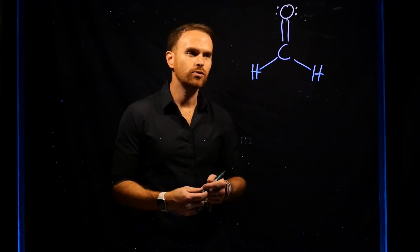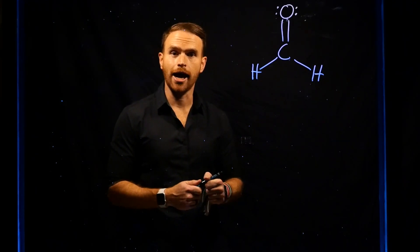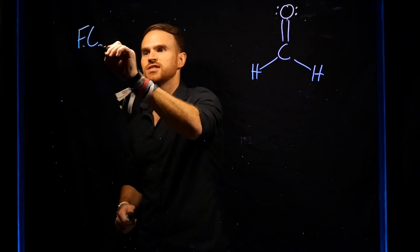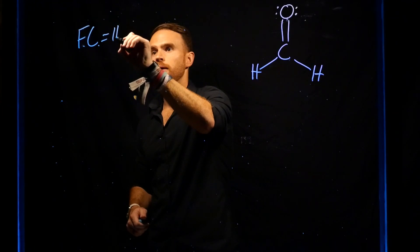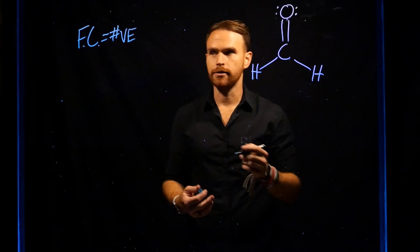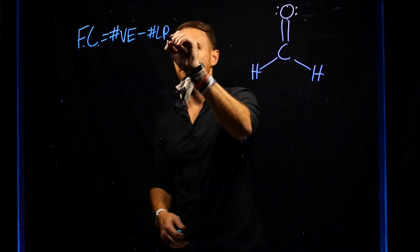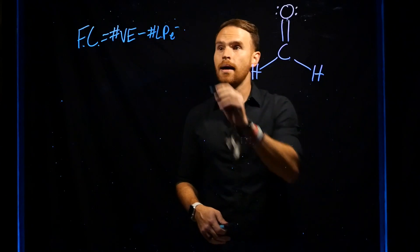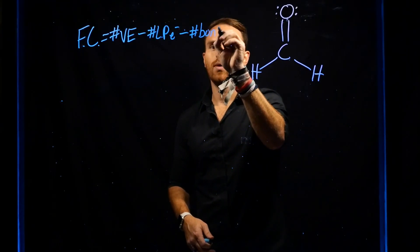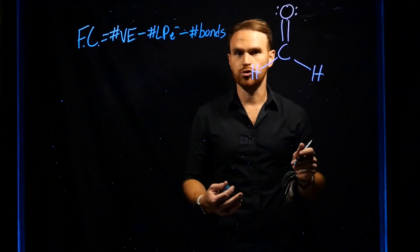Now that we have our Lewis structure, we can determine the formal charge around each atom. The formal charge, or FC, is equal to the number of valence electrons for any particular atom, minus the number of lone pair electrons, minus the number of bonds around that atom. We can do that for each atom individually.